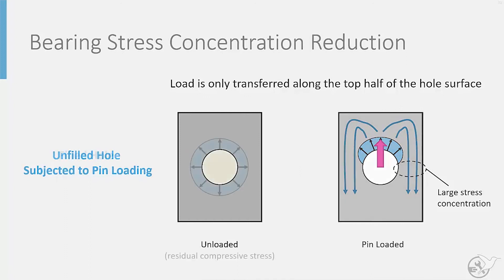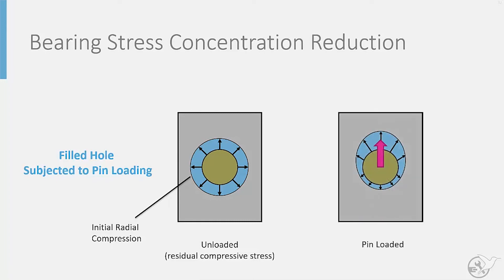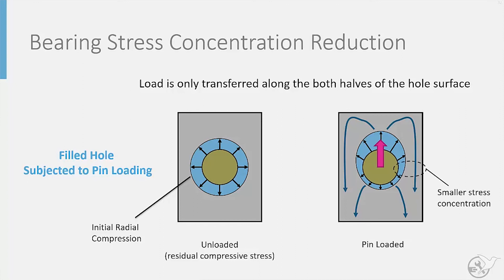If the hole is filled, the fastener begins with a radial compressive load acting all around it. As the bearing load is added, a reduction in radial compression on the lower half of the hole and an increase in the radial compression on the upper half of the hole transfers this load. Thus, the load transfer is spread over the entire surface of the hole, reducing the stress concentration factor.